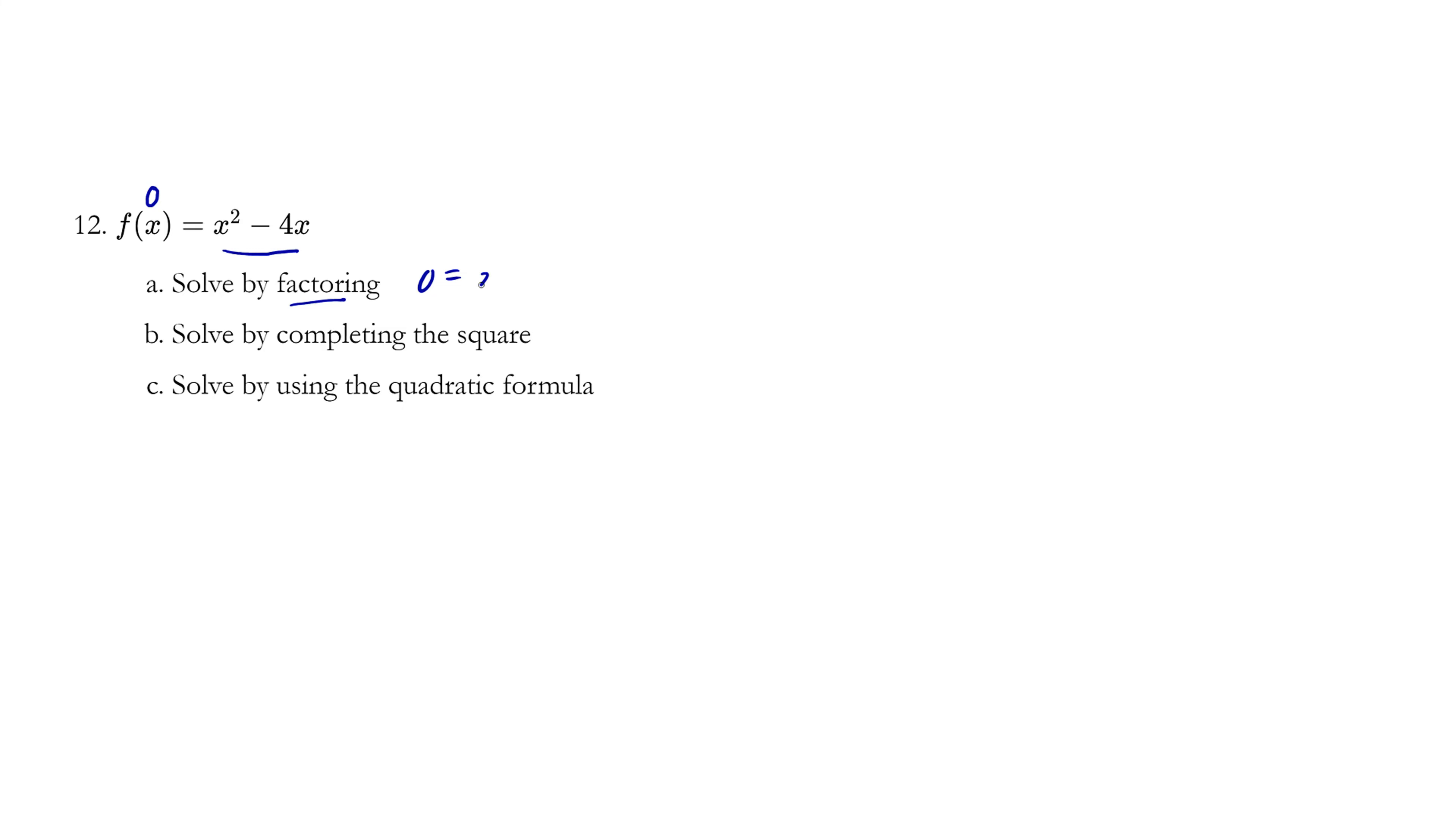We have an x that can be factored out and we have x minus 4. Something times something is 0. So therefore, x equals 0 or x equals 4. These are the solutions.